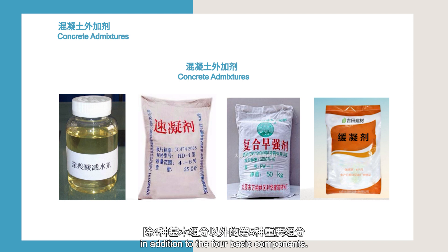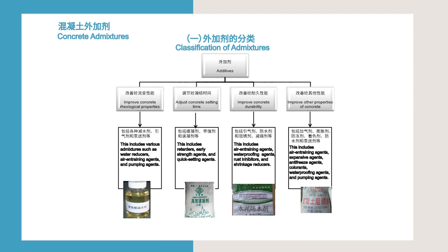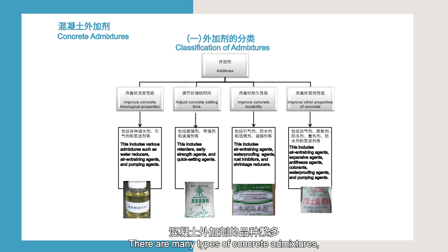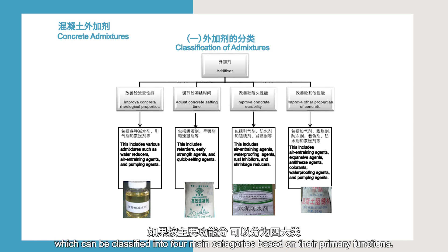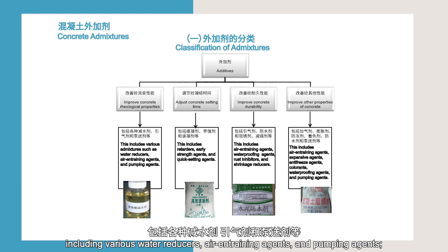In addition to the four basic components, there are many types of concrete admixtures, which can be classified into four main categories based on their primary functions. The first category is admixtures that improve concrete rheological properties, including various water reducers, air-entraining agents, and pumping agents.